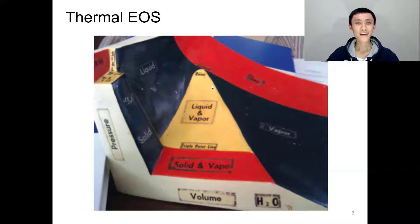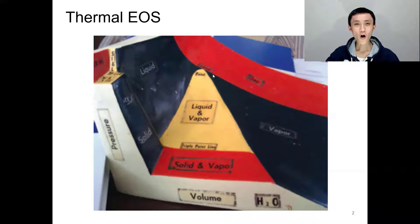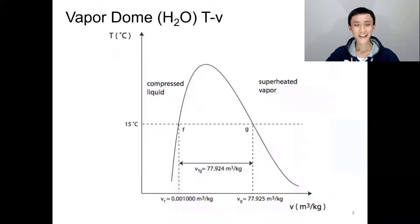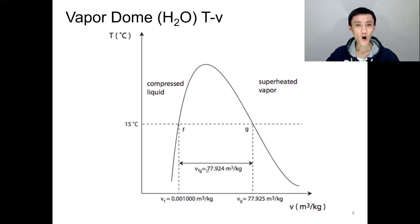In a similar concept, if we look at this model from the top — the top view — the x-axis is specific volume and the y-axis is temperature, and the result is a dome again. Everything under the dome is a mixture and is still saturated. Everything on the left of the dome is 100% liquid by specific volume, and everything on the right is 100% saturated gas by specific volume.